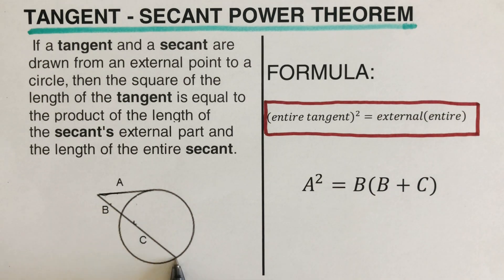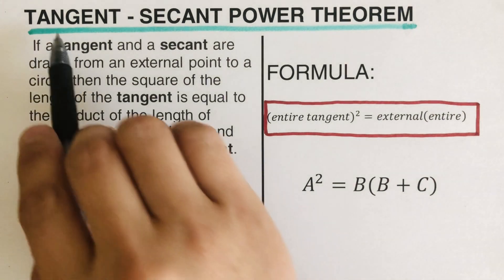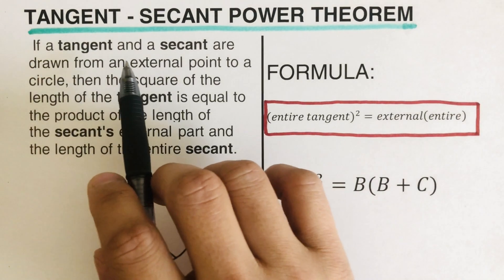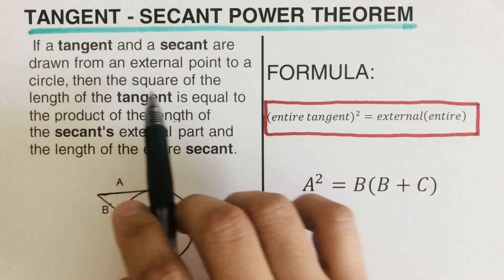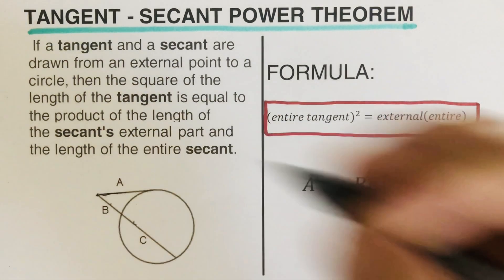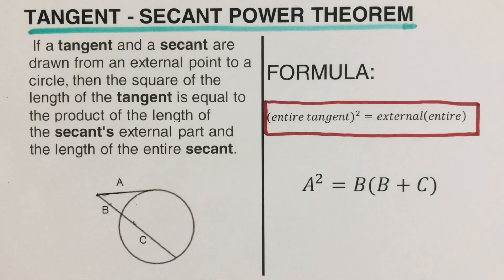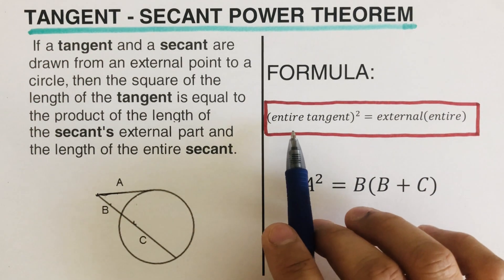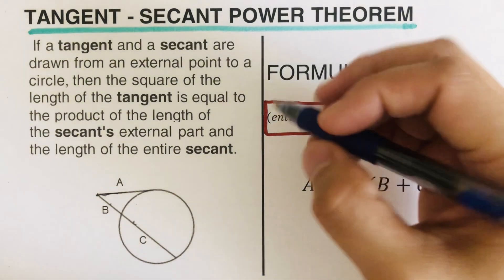This is the tangent-secant power theorem: if a tangent and a secant are drawn from an external point to a circle, then the square of the length of the tangent is equal to the product of the length of the secant's external part and the length of the entire secant. To better understand this, I wrote the formula here in words.